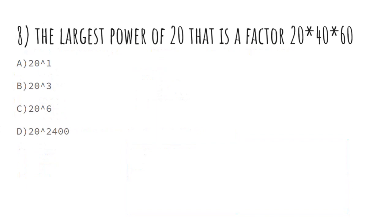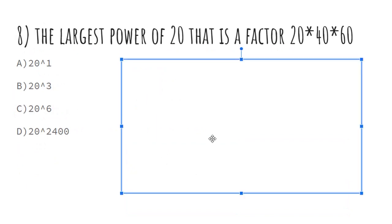Now, eight: the largest power of 20 that is a factor of 20 times 40 times 60. So 20 times 40 times 60 is 48,000. And now let's just start off with B, because A cannot, because I bet there's something better than A. And 48,000 is a multiple of 20 times 1, but I bet there's something else.